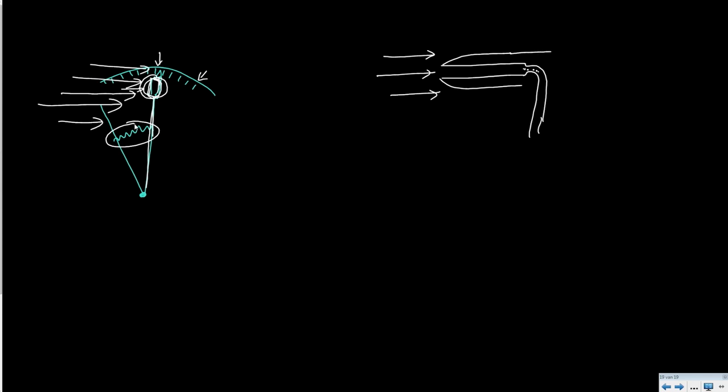There is also an opening on the side of a pitot tube or sometimes somewhere else in the fuselage. And this is called the static opening. And there the air passes by and you measure a lower pressure, which is called the static pressure.